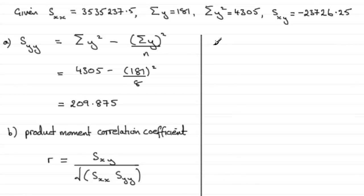Now that means that therefore the product moment correlation coefficient r is going to be equal to s_xy. So we can just copy our values down here. We've got minus 23,726.25.